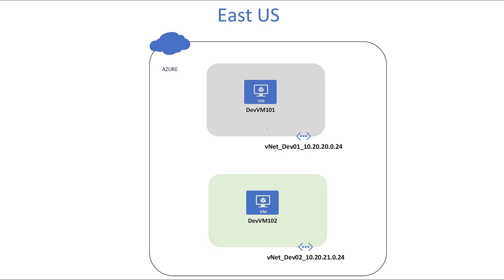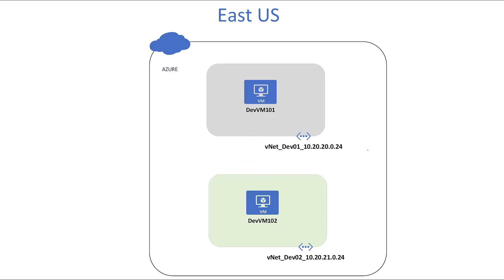Let's understand why we need virtual network peering. Assume you have two VMs each sitting inside their own virtual network — devvm101 inside dev01 vnet, and devvm102 inside dev02 vnet. These two VMs need to talk to each other, but under normal circumstances they cannot. Any VM inside one vnet cannot talk to a VM in a different vnet, because each vnet has a security boundary limiting communication. To enable this, you need to connect the two vnets — and that connection is what vnet peering is all about.